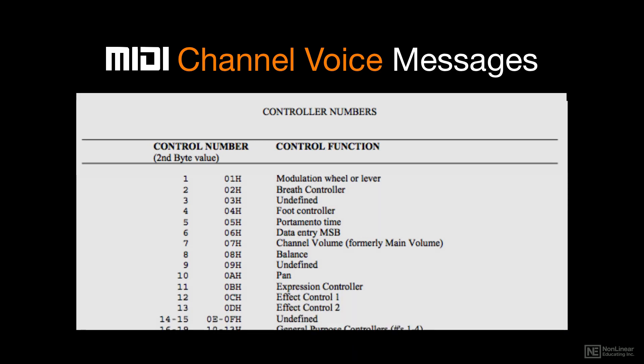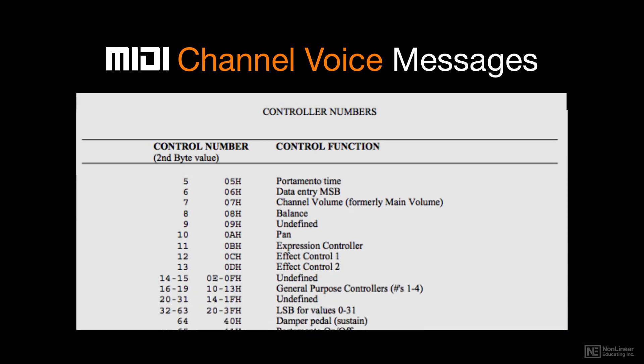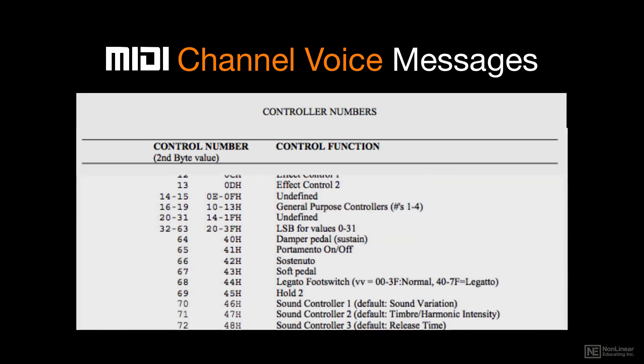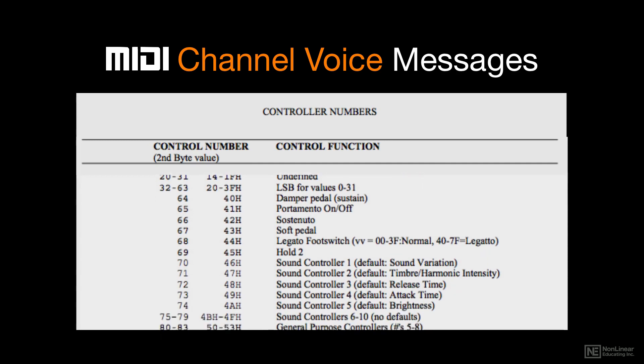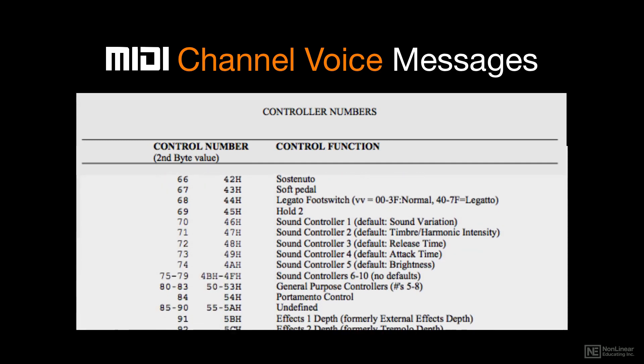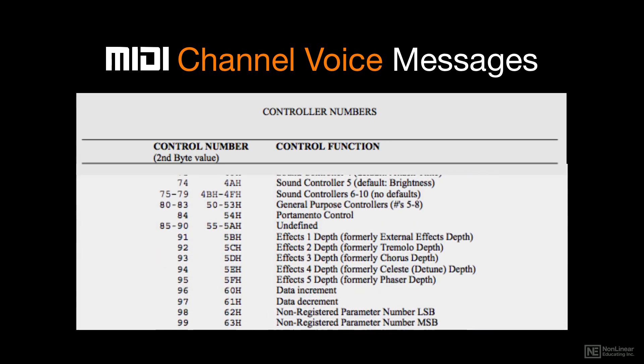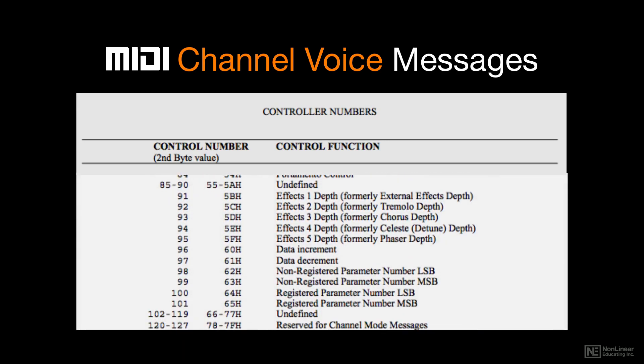The control change category actually incorporates 120 separate messages for describing various aspects of musical performance — some fixed, some freely assignable. These messages are often used not only for musical performance gestures, but also for tweaking parameters on synths, samplers, and even effects.